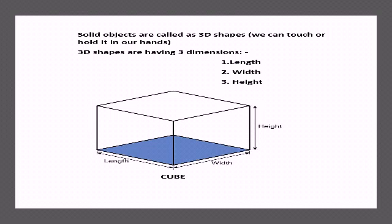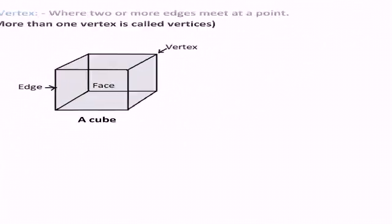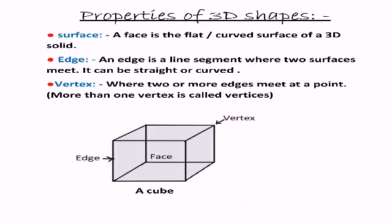I have given here one image. Observe the image — there are length, width, and height. Now let us move on to the properties of 3D shapes. Let us recall what we discussed about 2D shapes: there are properties such as vertices, sides, and angles. Today we are going to learn about the properties of 3D shapes. 3D shapes have surface, edges, and vertices.